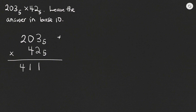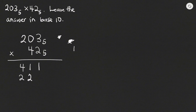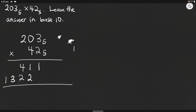Now we move to the second digit, which is 4. 4 multiplied by 3 gives 12. How many times will 5 go into 12? Twice, giving 10, with remainder 2. We write 2 as the remainder. Then 4 multiplied by 0 is 0, plus the 2 we carried, gives 2. Then 4 multiplied by 2 is 8; 5 goes into 8 once, leaving remainder 3. We write 3 and carry 1.